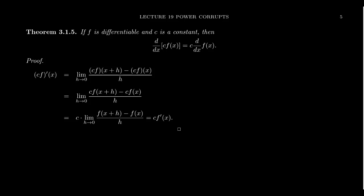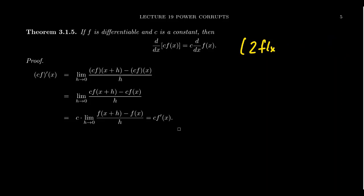In other words, if you take a number like 2 times f of x and you're taking the derivative, it'll just be 2 times f prime of x. You can factor the constant multiple out of the derivative process, and this is a natural consequence of limit laws.